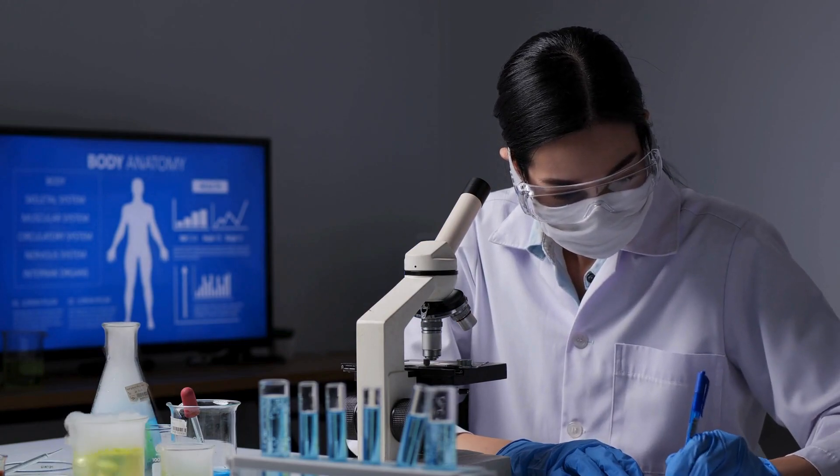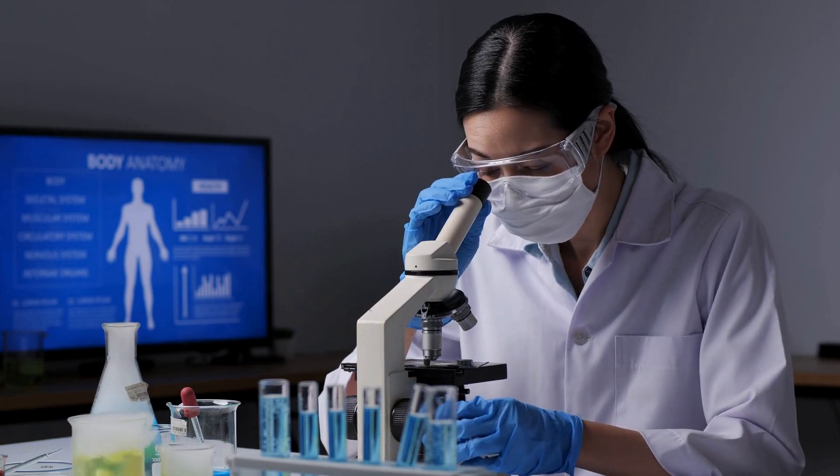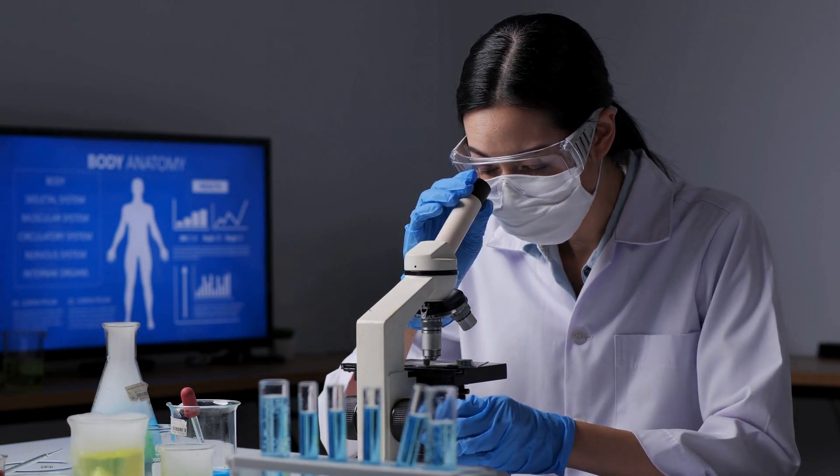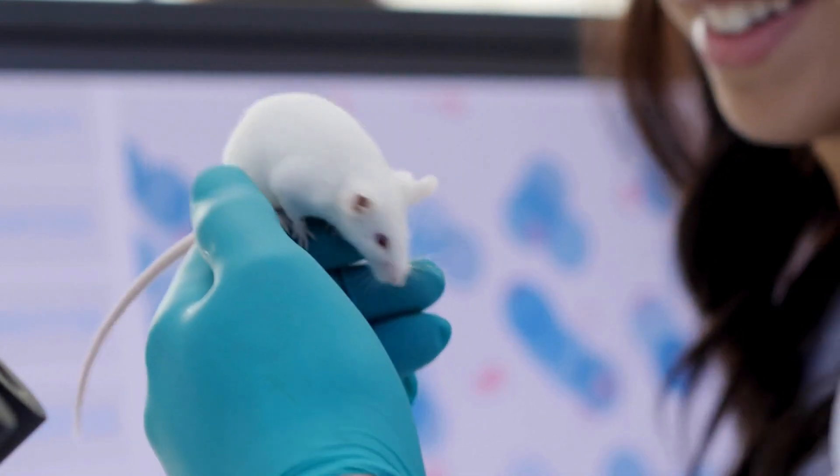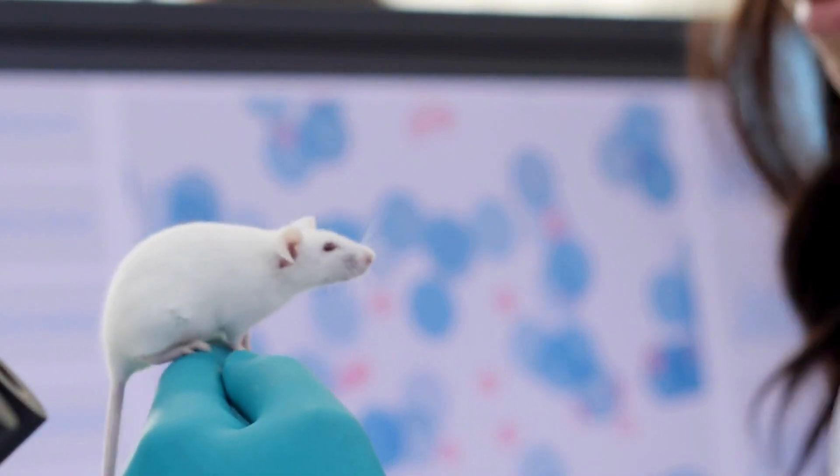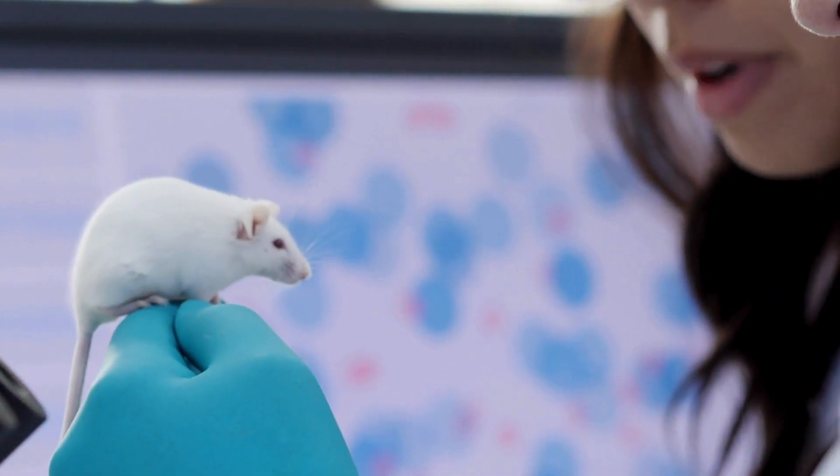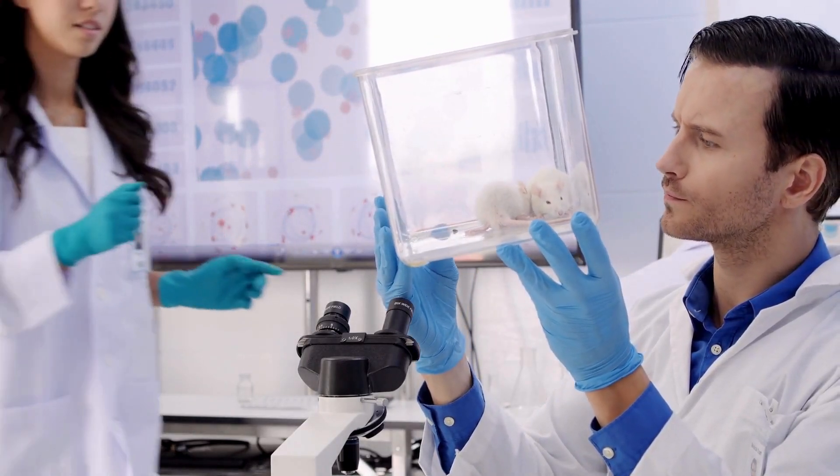After three months, scientists compared the conditions of the mice from different groups. It turns out that the memory and behavior tests of mice with Alzheimer's disease which received CMS-121 show results similar to those of healthy animals. The sick mice that were not given CMS-121 showed a predictable deterioration in test results.